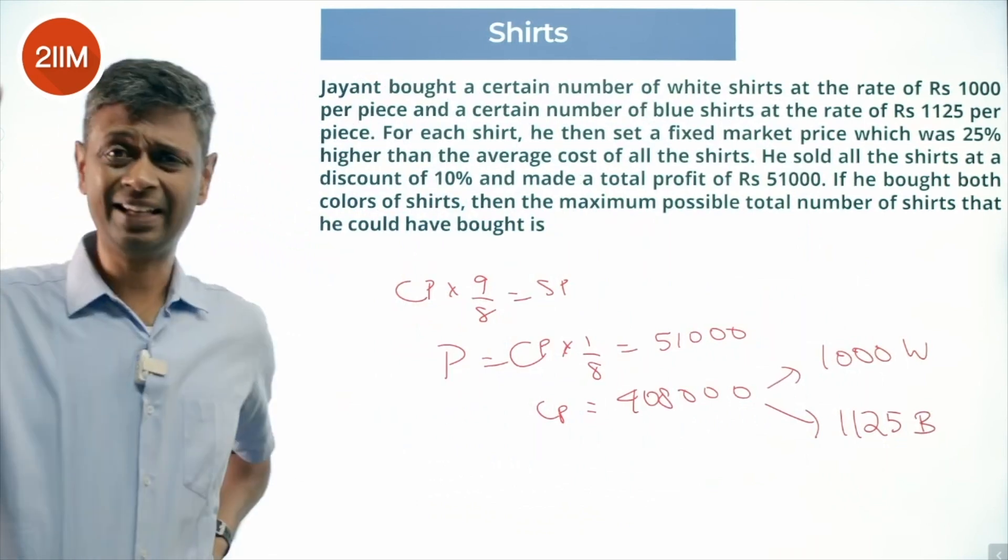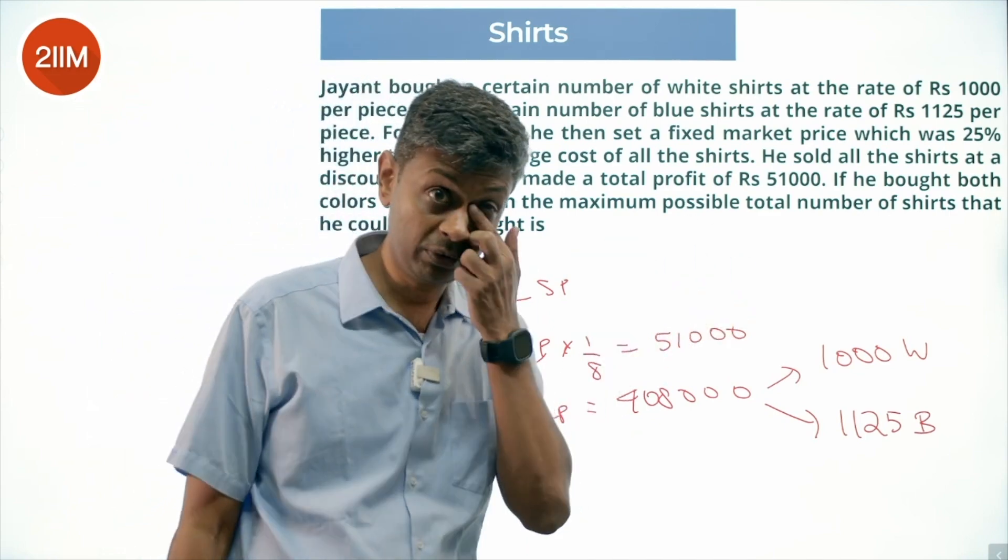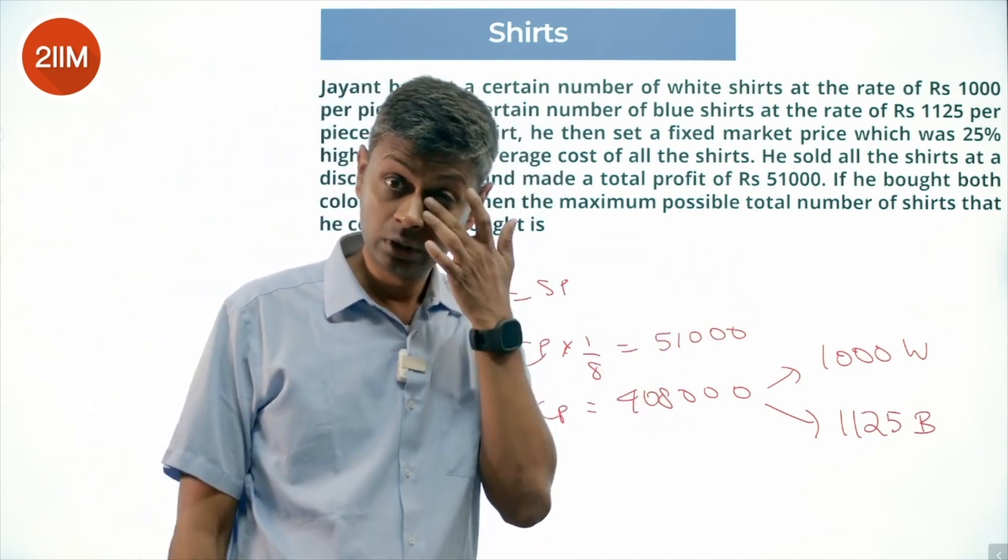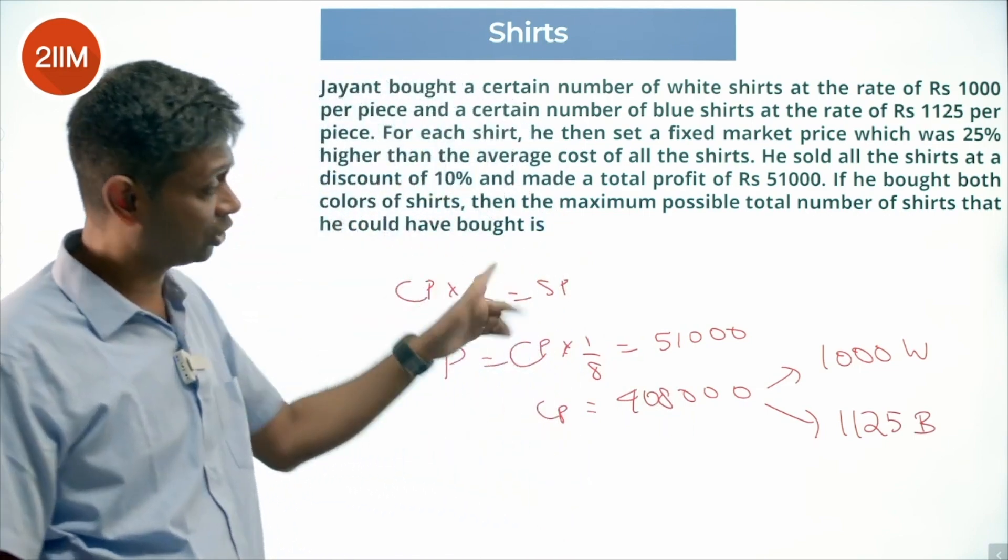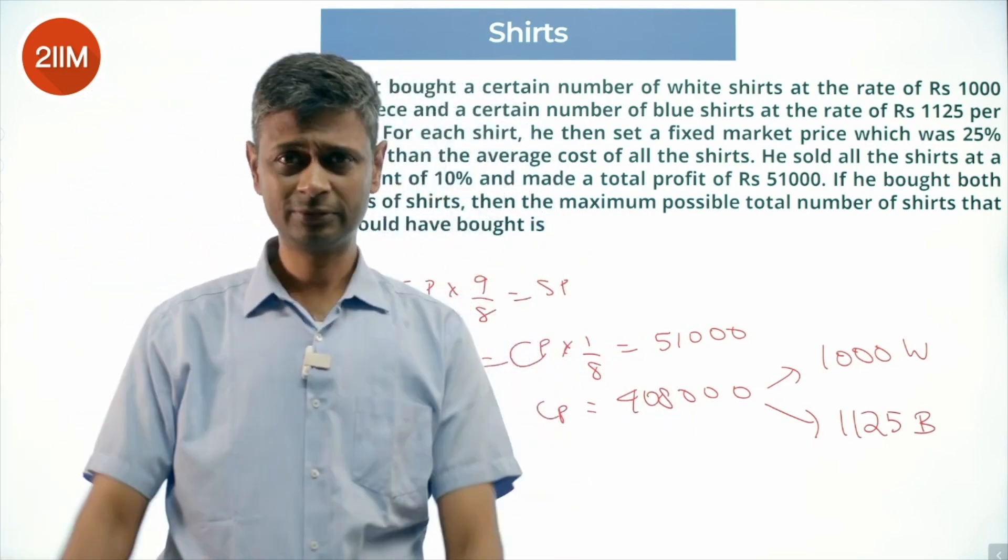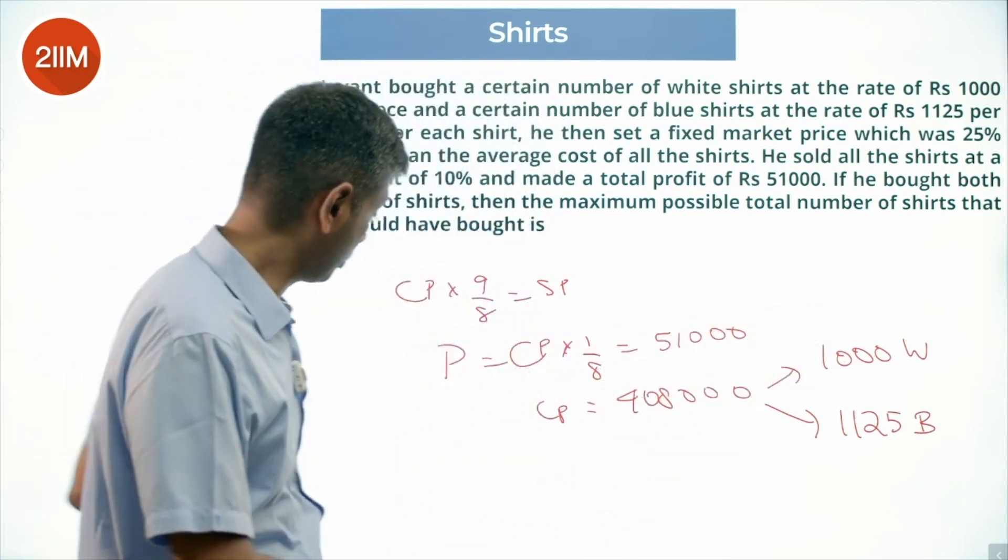To maximize the number of shirts, the easiest way would be all white shirts: that would be 408 shirts. But we're clearly told he bought both colors of shirts, so I cannot say he bought only white. So 408 is not possible.